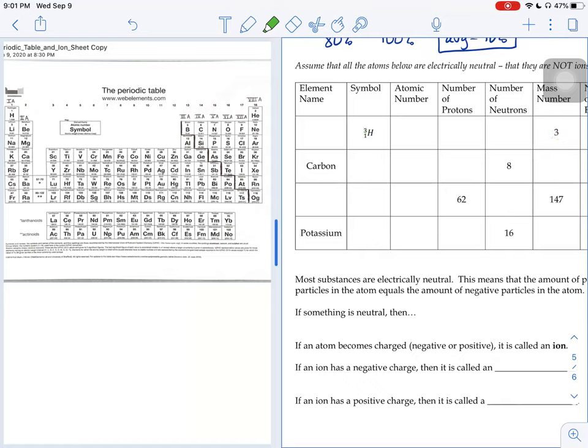The bottom number of that 3, 1, H is the atomic number. So 1 is the atomic number, and atomic number always tells you the number of protons 100% of the time. That never changes.